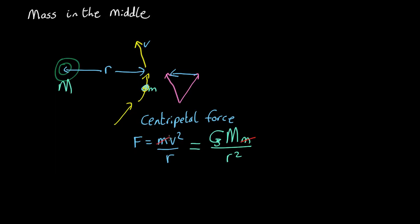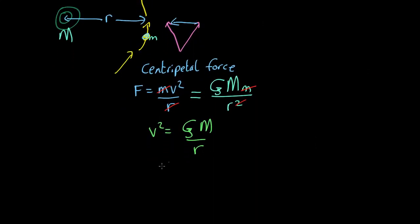So we cancel out the small masses, cancel out one of the r's and we find that if you want to work out the velocity for example, v squared equals GM over r. Or if you want to work out the mass, M equals rv squared over G. You can rearrange that.